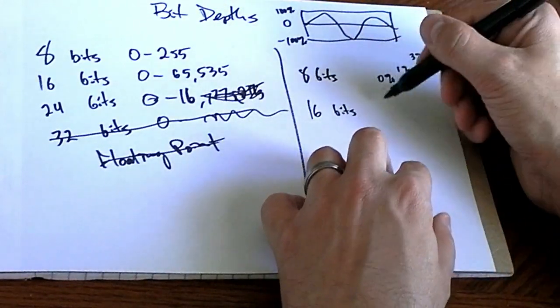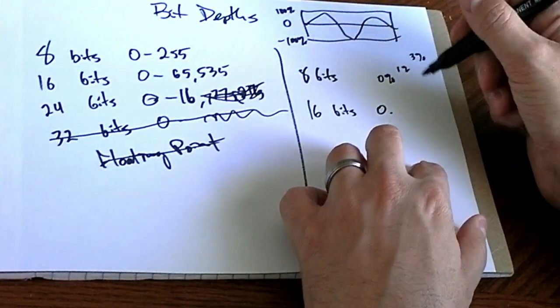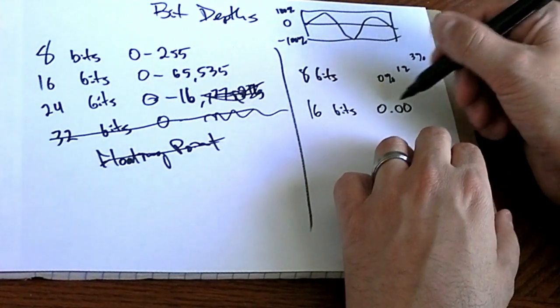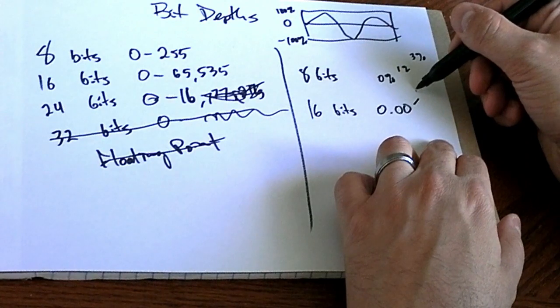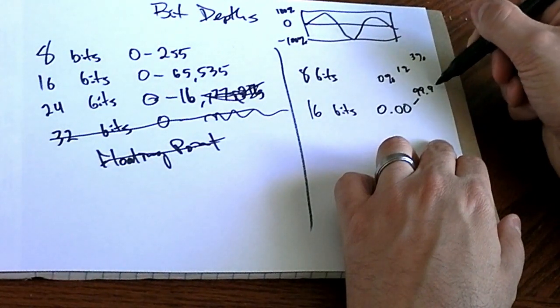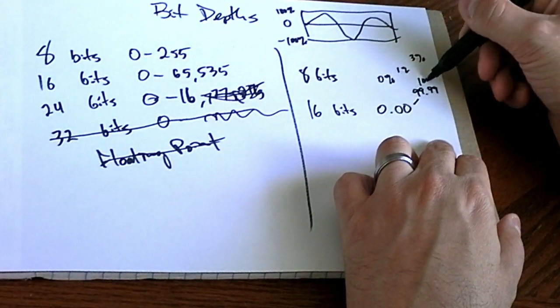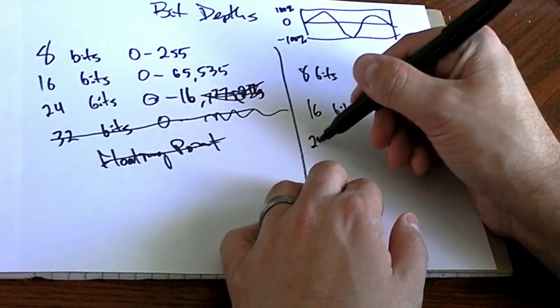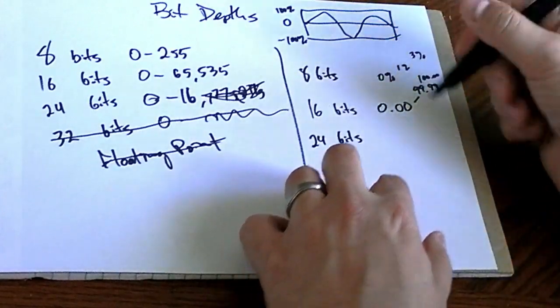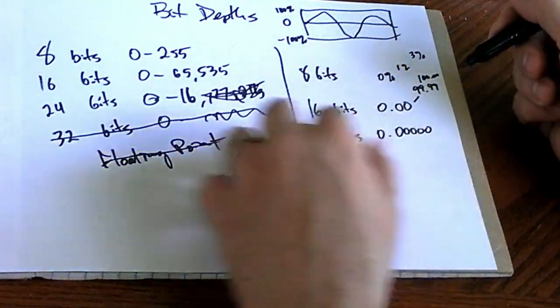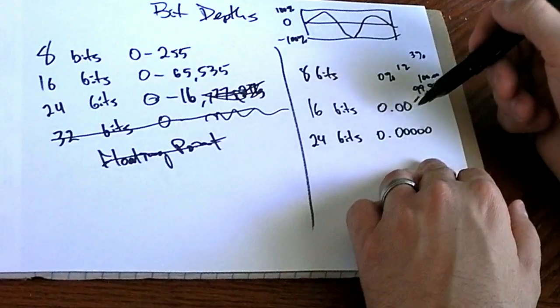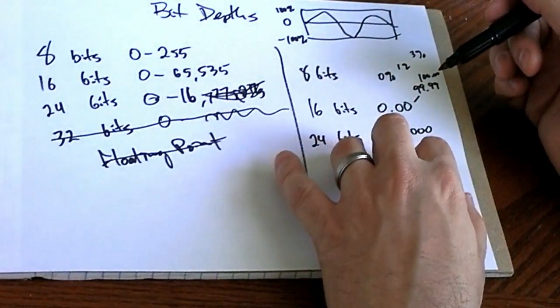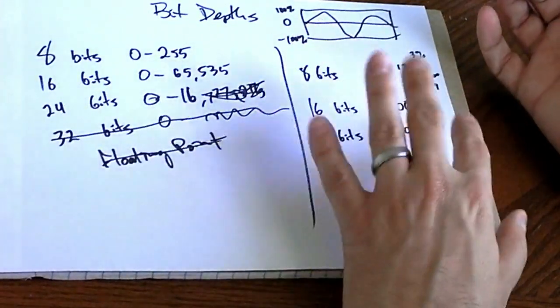16 bits is roughly the same as adding a few decimals of precision. So it can go up to 99.99% before it gets to 100.00%, and so on. 24 bits is a lot more precision, several more decimals after that. So at 24 bits, you've really got as much dynamic range as you would need for almost anything.